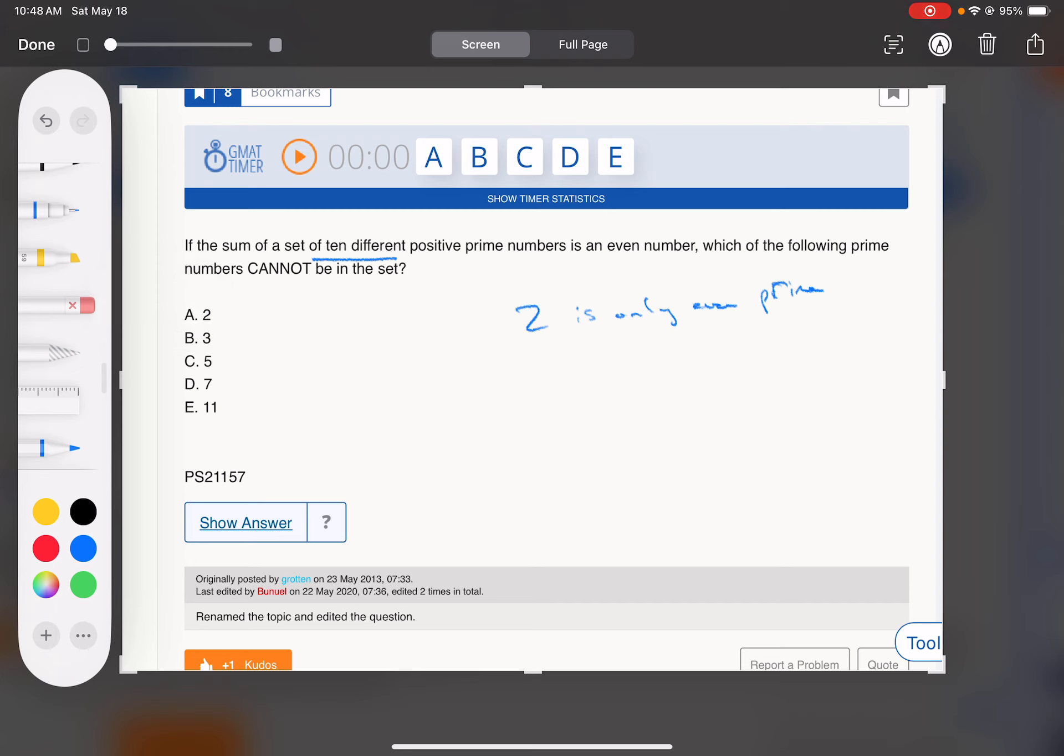So basically, these are all going to add up to an even number. That means two can't be involved, because two would throw it off to be an odd sum, so two cannot be in the set. That's all.